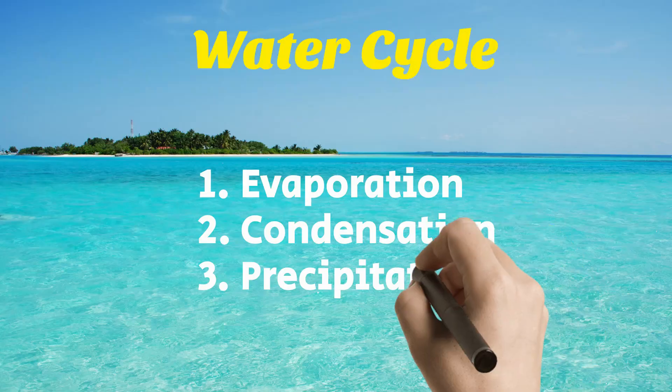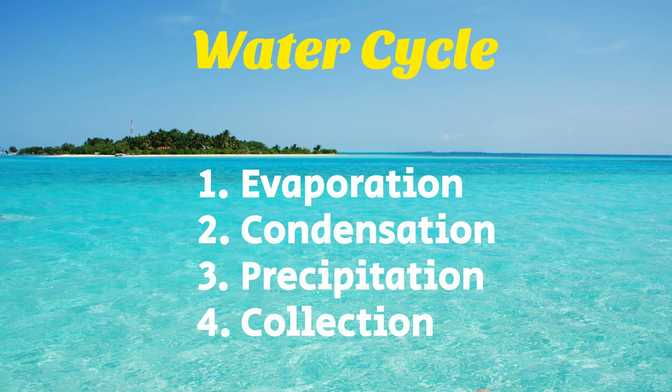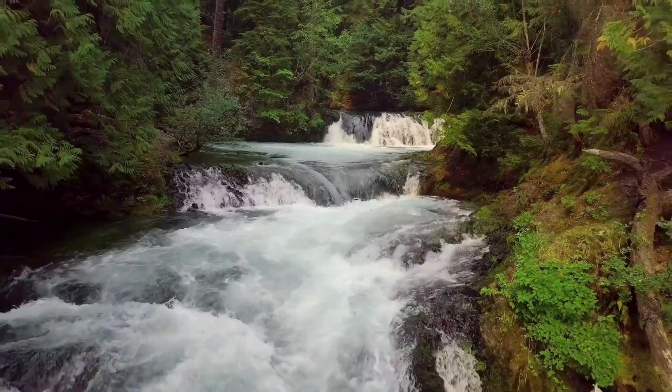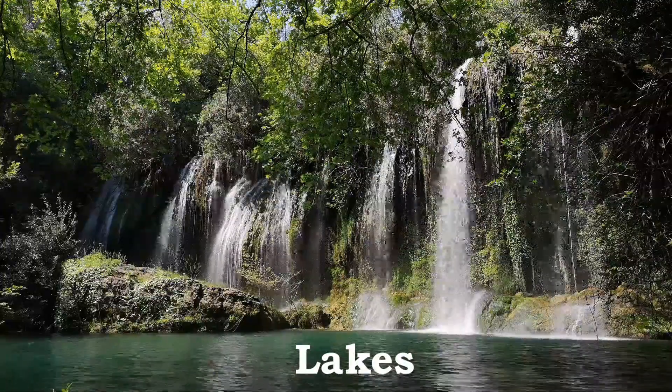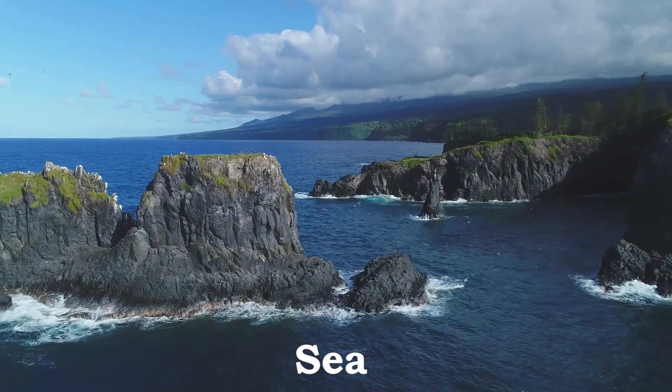Then comes the final stage of the water cycle: collection. When the water hits the ground as whatever it precipitated as, it runs down into rivers, streams, lakes, oceans, and seas, where it's ready to start the cycle all over again as it gets evaporated into the sky.